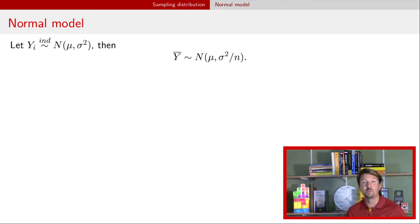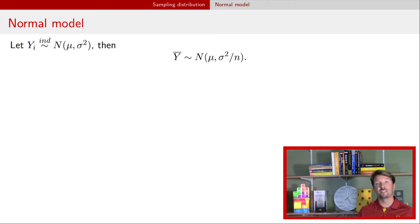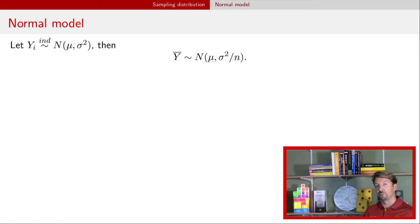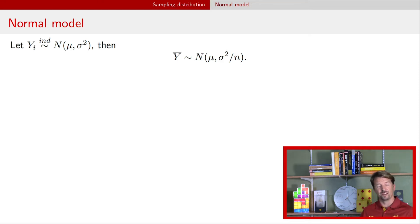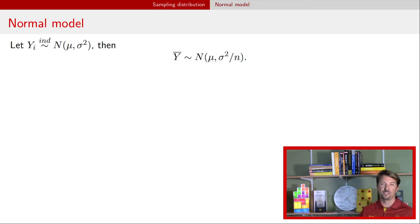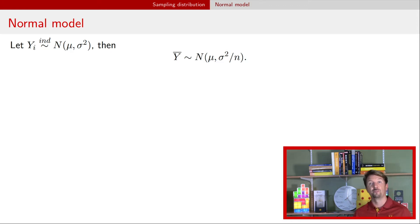Let's talk first about the normal model. We're going to have independent observations with a mean of mu and a variance of sigma squared. We've shown in a previous video that the average has a normal distribution with a mean of mu and a variance of sigma squared divided by n.